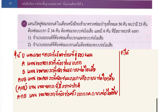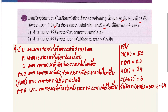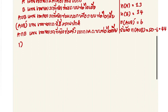จะได้ N(U) เท่ากับ ห้าสิบ, N(A) เท่ากับ ยี่สิบสาม, N(B) เท่ากับ สามสิบสี่, N(Complement A Union B) เท่ากับ หก ดังนั้น N(A Union B) จะเท่ากับ ห้าสิบ ลบ หก เท่ากับ สี่สิบสี่ เราก็จะนำข้อมูลมาตอบคำถามกันนะคะ